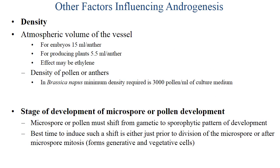Coming to other factors influencing androgenesis. One is density — the atmospheric volume of the vessel and density of pollen or anther. In Brassica napus, the minimum density required is 3000 pollens per ml of culture medium.